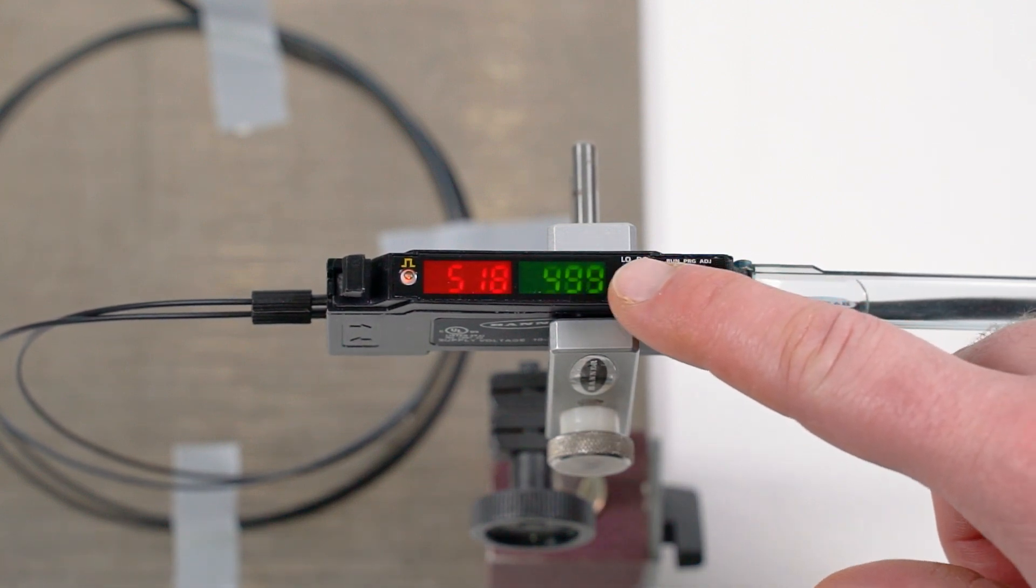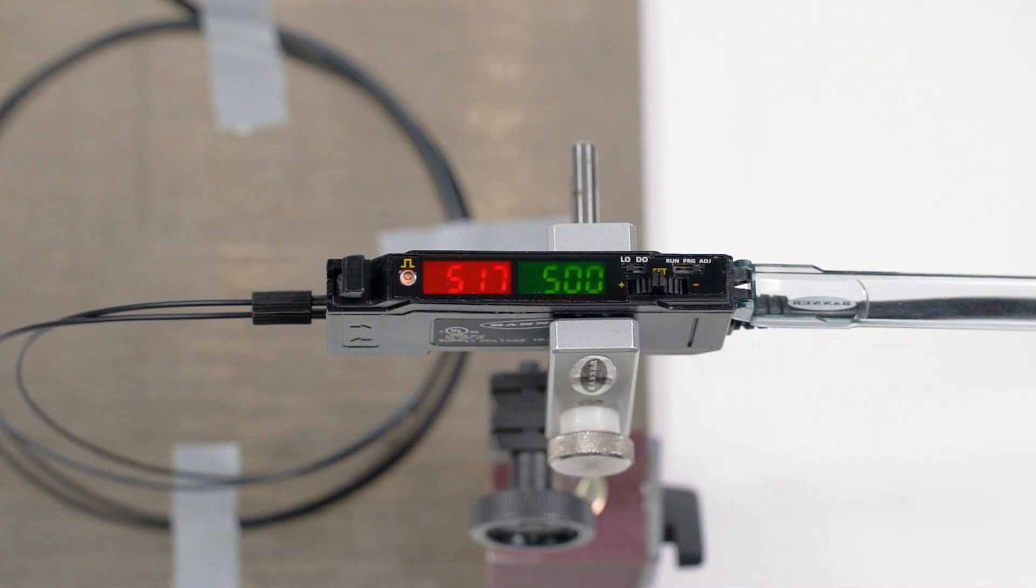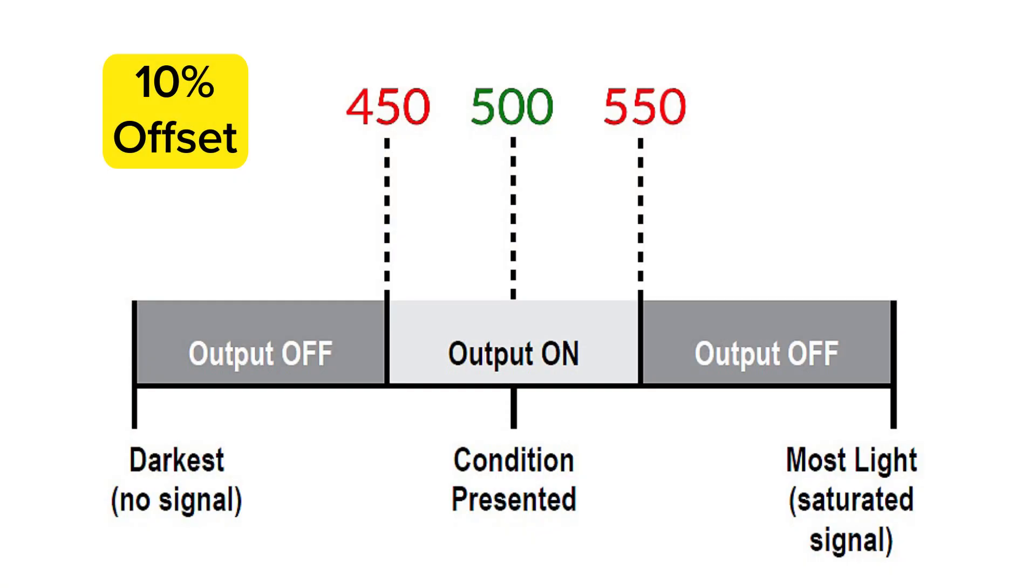After selecting a value, leave the rocker button alone for two seconds and the display will flash to confirm the new set value. By default, the size of the window is plus and minus 10% of the midpoint.